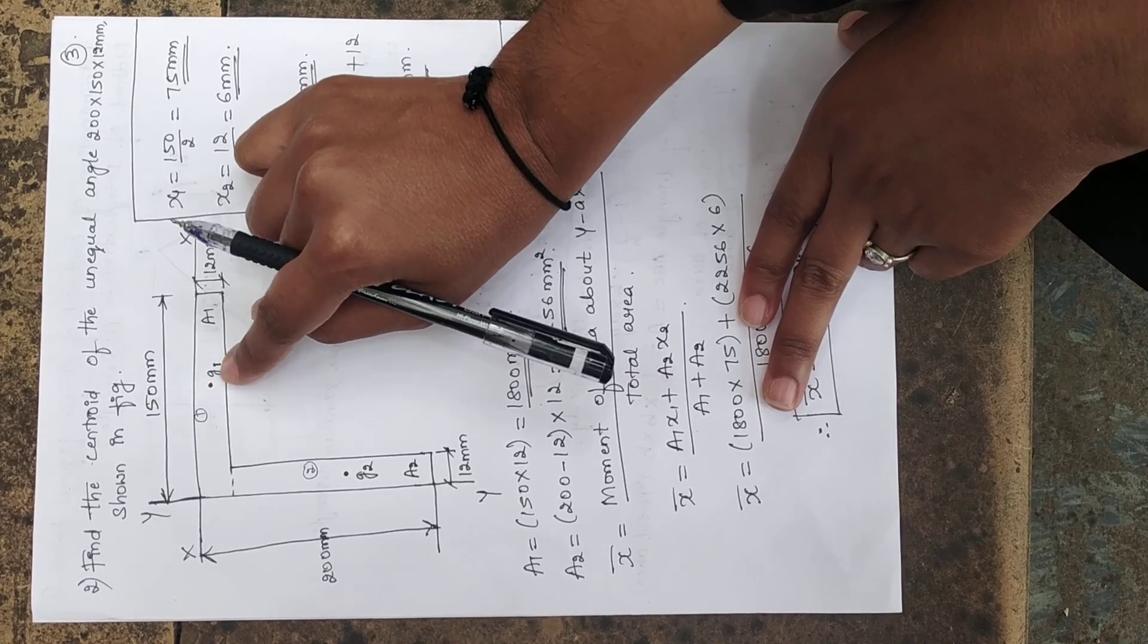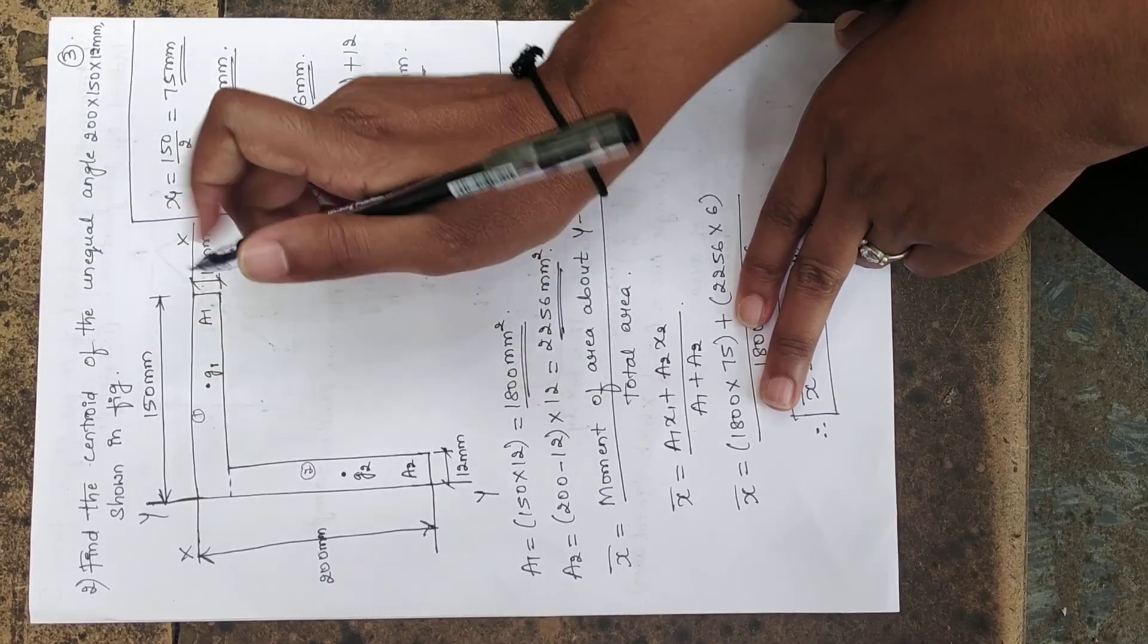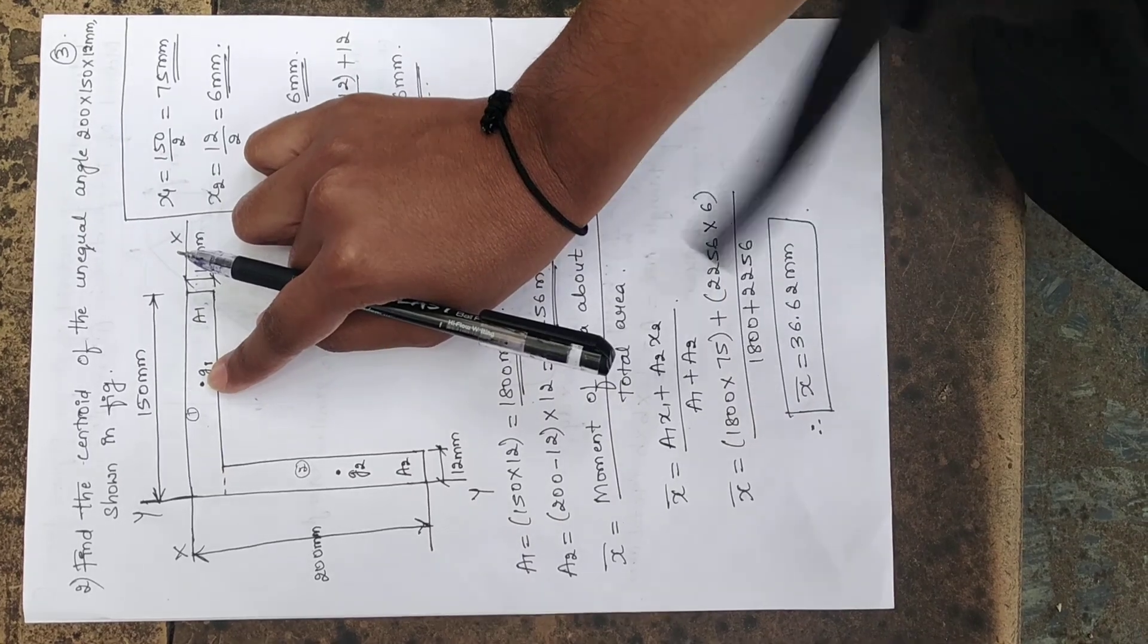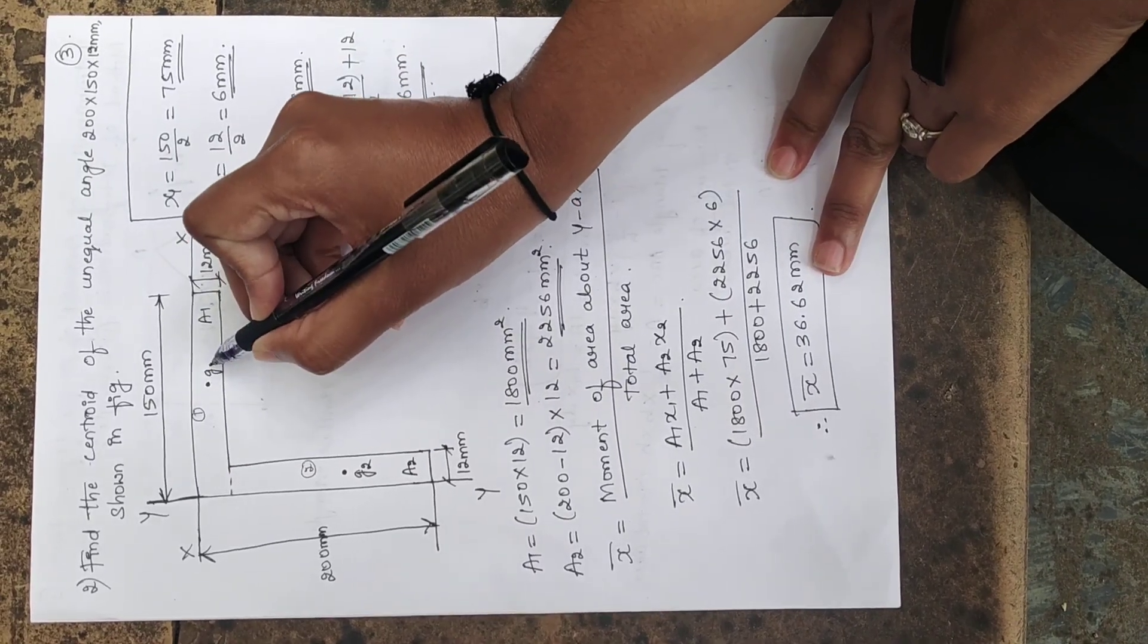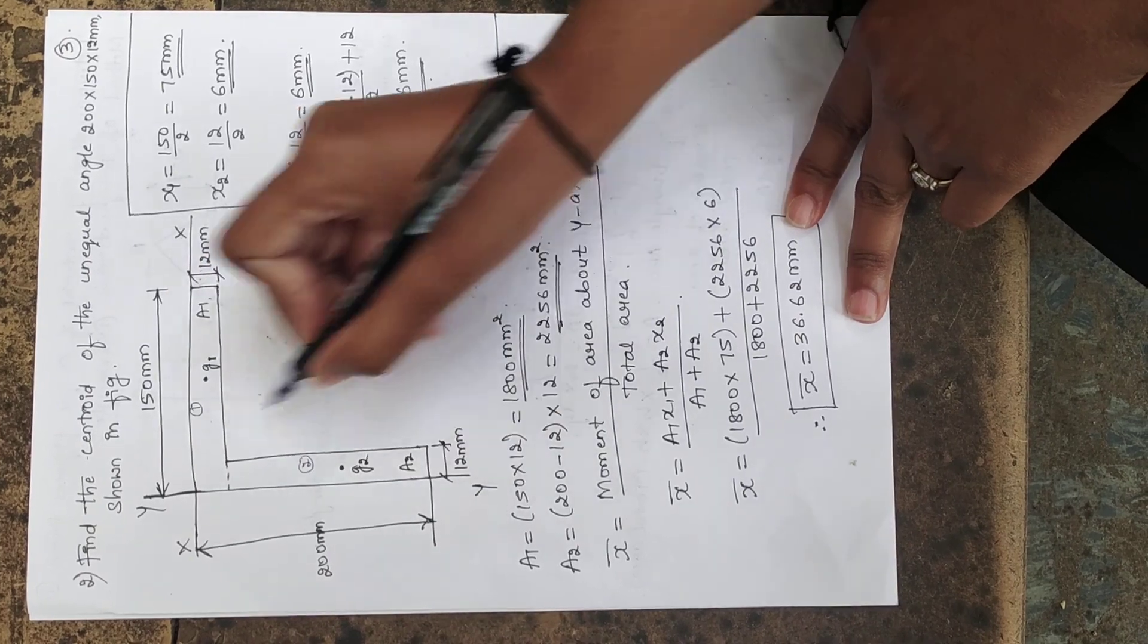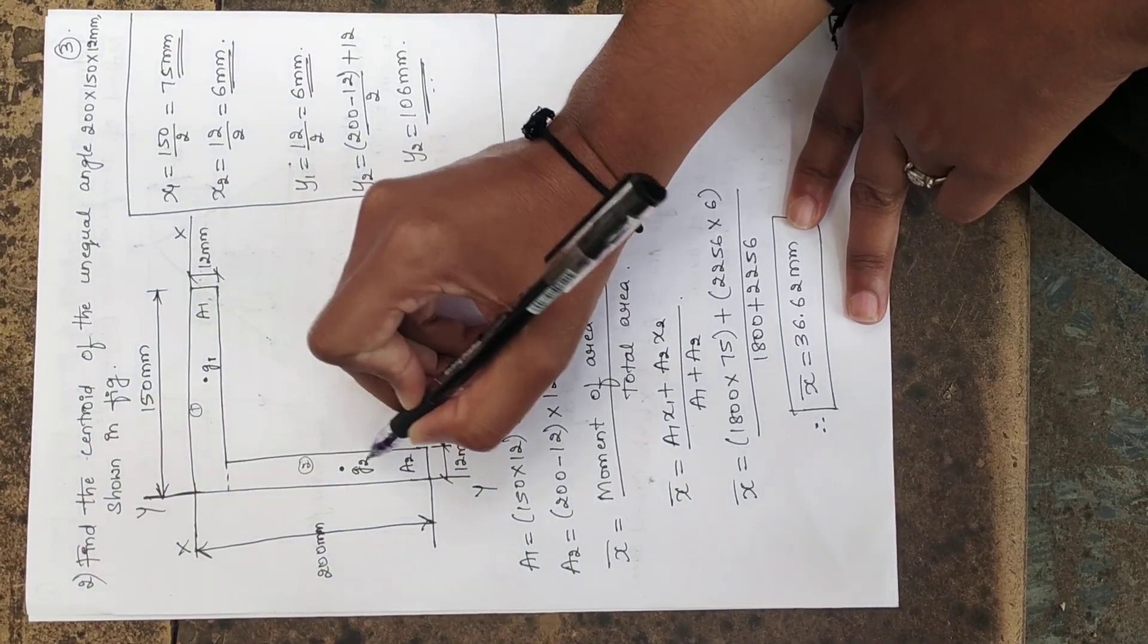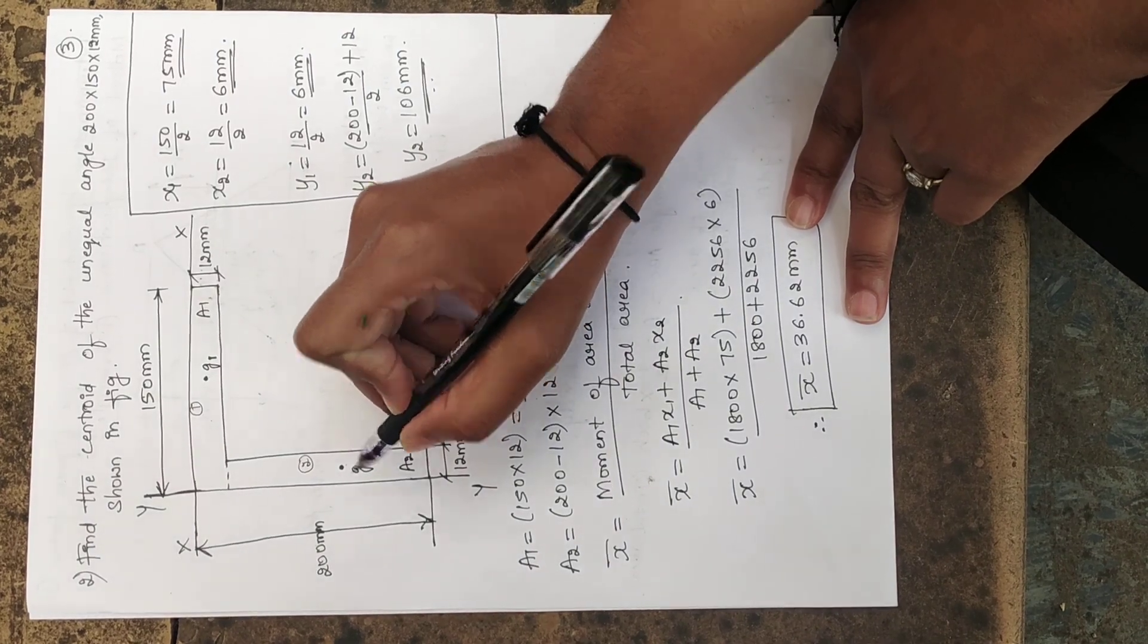Similarly, let us locate the centroid of the first rectangle. As this is the rectangle, the centroid lies exactly at the middle. Hence, this point is named as G1. Likewise, let us locate the centroid of the second portion. Somewhere here, the centroid is lying. Let us name that as G2.